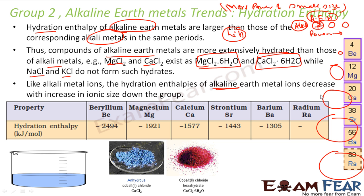This is what we saw in the last example also. This is cobalt chloride, which is blue in color. The moment it is hydrated — that is, when you add water — this becomes CaCl2·6H2O. Hydration means water; when the word hydration comes, think of water. Any substance which is anhydrous, when you add some water to it, it adds water molecules to that — it can be 6, 10, 1, or any number of water molecules.